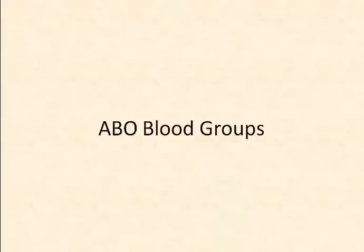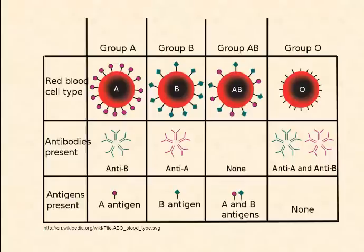Let's take a look at the ABO blood groups first. Perhaps you know your blood type, or maybe you don't. People who have blood type A have A antigens on the surface of their red blood cells. People with blood type B have B antigens. People with blood type AB have both types of antigens, and group O people have no antigens on their red blood cells.